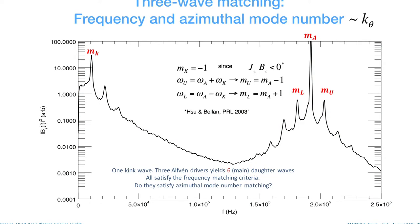I'll identify the lower sideband, which I'll denote with an L. The upper sideband with U. I will call the kink mode denoted with K. The antenna or Alfvén wave frequency, I'm going to label with an A.